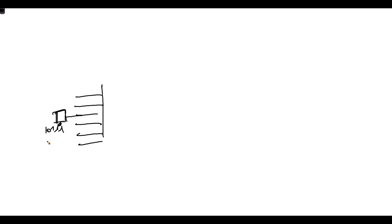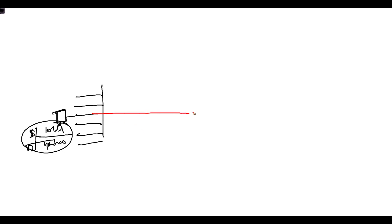Let me take a simple example using Cisco products. A user with a source address initiates traffic destined to a Yahoo server. In general, this traffic is supposed to go to the gateway, and the gateway may then redirect the traffic to a proxy.